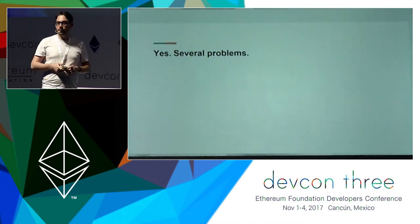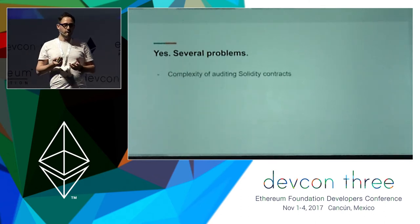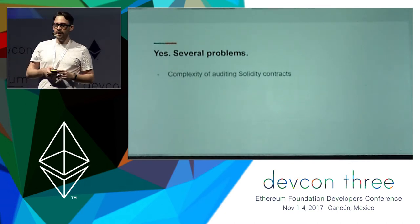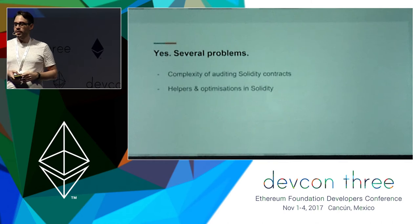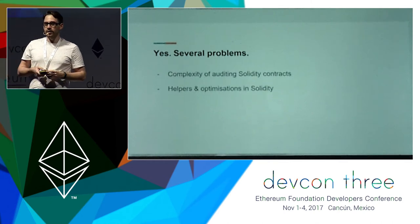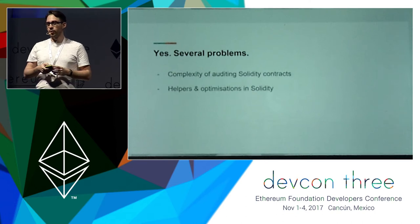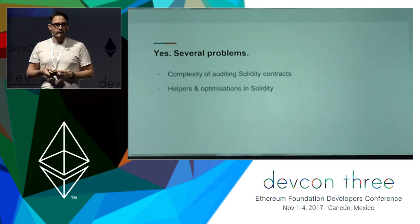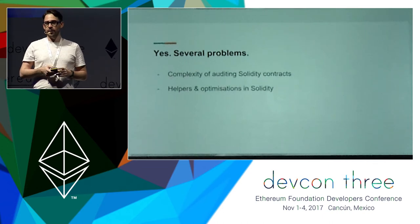We do have a couple of problems, and most of these are actually related to the Solidity compiler itself. The first problem is that auditing contracts written in Solidity is not that simple. The Solidity compiler is written in C++, and a lot of helpers and code generators are quite complex — and with time, they can become even more complex as more features are added. The next problem is optimizations: different optimization steps in the compilation can become very complex as well.